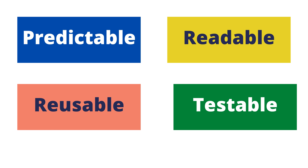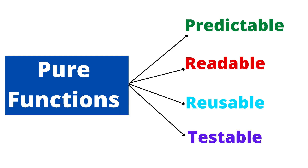All the points I have discussed — predictable, readable, reusable, testable — are the characteristics of pure functions. A pure function has all of these characteristics: it will always produce the same output for the same input, and it is a reusable piece of code.